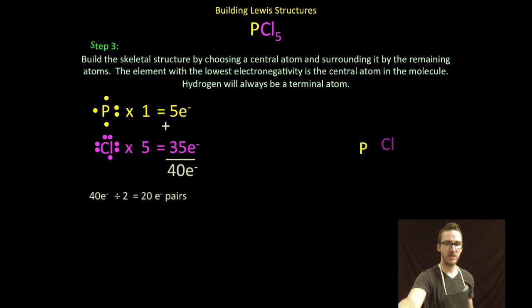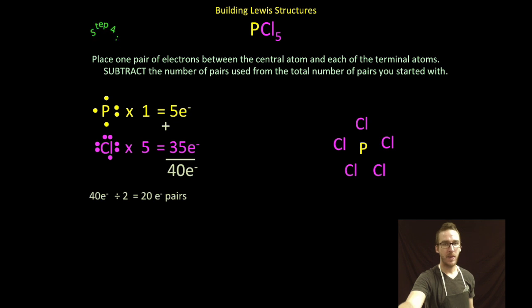So, phosphorus is going to be my central atom. I'm just going to surround it by all of the other atoms, five chlorines. I want to place a pair of electrons in between that central atom and each of the surrounding terminal atoms. It's going to take me five pairs of electrons to do that.